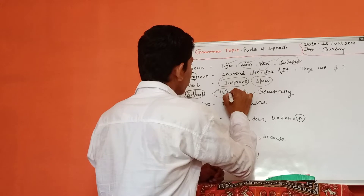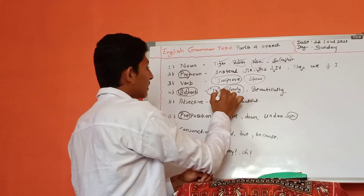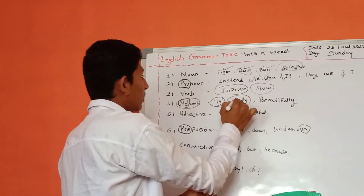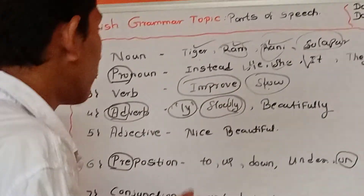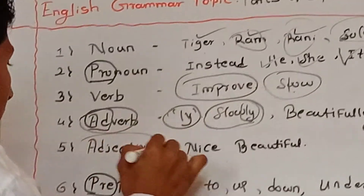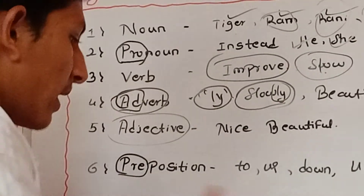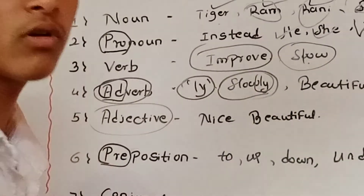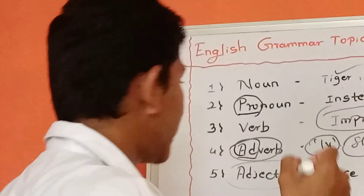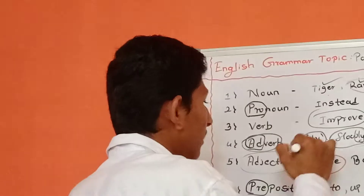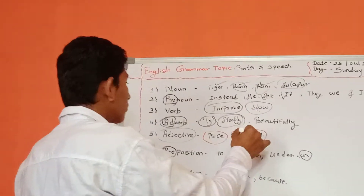I have written some examples here. 'Slow' is a Verb, and here it is acting as an Adverb because we added '-ly.' I hope that you understood. Adjective means which describes the Noun or Pronoun — that we call Adjective. 'Nice' is an Adjective I have written here, and 'Beautiful' is also an Adjective.